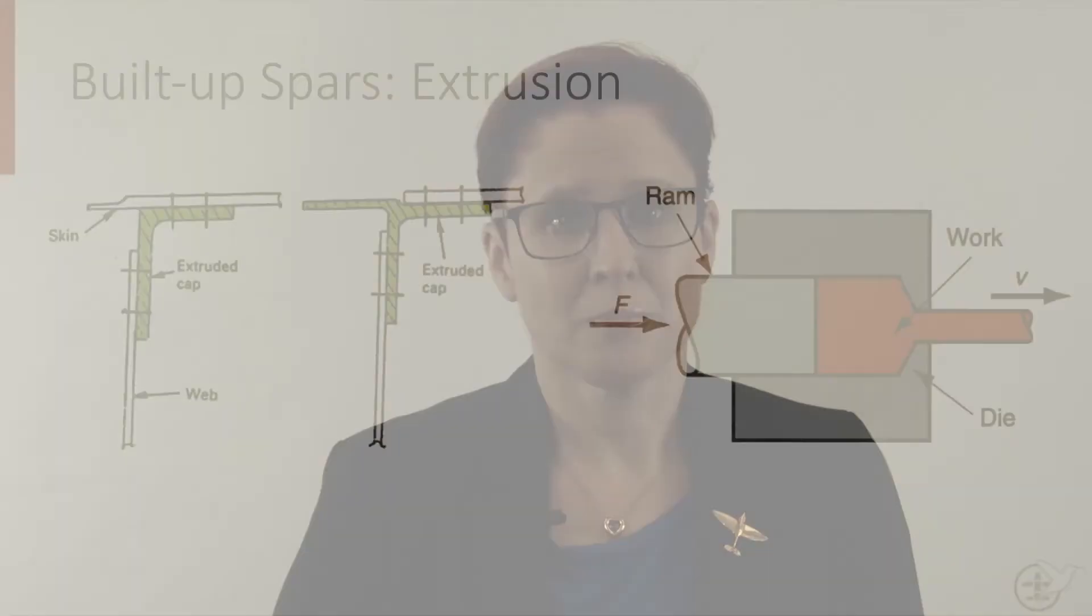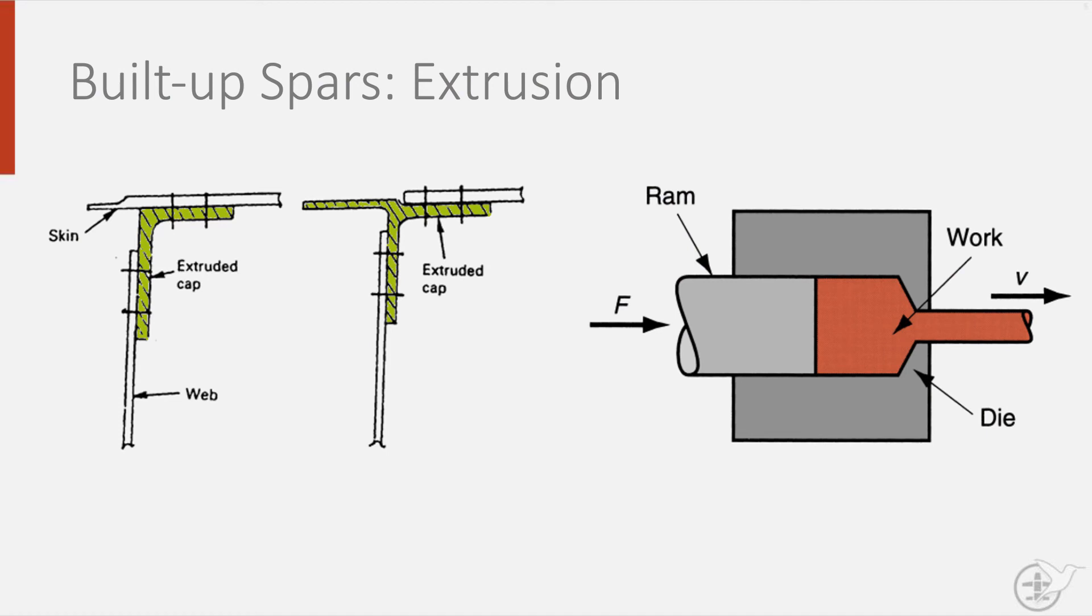Let me now zoom in on two frequently used spar caps and how they are built up. First, a spar based on extruded flanges, as shown here. Extrusion is a process whereby metal is pushed through a die to get its shape. Plate metal is then attached to form the web and the skin is attached on top.